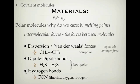At the top end of our intermolecular forces — even though all of these are quite weak — the strongest of the weak ones are hydrogen bonds. Hydrogen bonds are dipole-dipole bonds involving fluorine, oxygen, or nitrogen: the FON molecules. Remember, hydrogen bonds are FON — fluorine, oxygen, and nitrogen. These bonds are the strongest of our weak intermolecular forces.